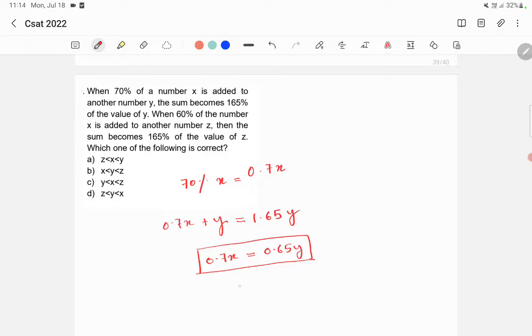From here, we can write x is equal to 0.65y by 0.7 or it is equal to 65y by 70. So here, 65 is less than 70. That means y is greater than x. Because value of x is 65 by 70 into y. 65 by 70 is less than 1 because 65 is lesser. So x is less than y.